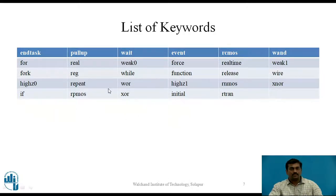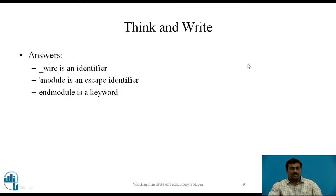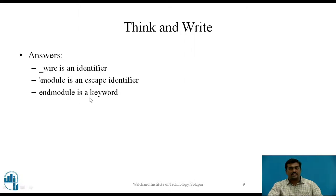Here is another list of keywords, including the wire keyword used to define wires. Now pause the video for two minutes and write down the answer to the following question. The answer is: the first entity, _wire, is an identifier — because although 'wire' is a keyword, it starts with an underscore, so it is an identifier. The second, \module, is an escape identifier — although 'module' is a keyword, since it starts with a backslash it is an escape identifier. The third example, endmodule, is a keyword.